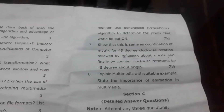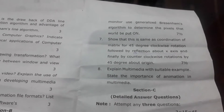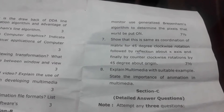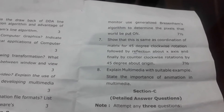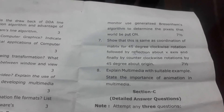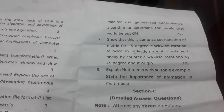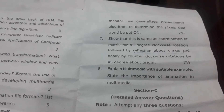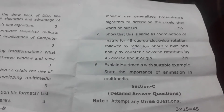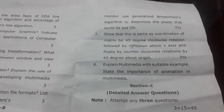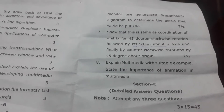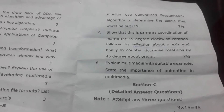Question 6 — It is desired to draw a line starting at point A(3, 6) and ending at point B(6, 2) on a graphics monitor. Use the generalized Bresenham's algorithm to determine the pixels that would be plotted. Question 7 — Show that the transformation matrix for 45-degree clockwise rotation followed by reflection about the x-axis and then counter-clockwise rotation by 45 degrees about the origin is the same. Question 8 — Explain multimedia with a suitable example and state the importance of animation in multimedia.